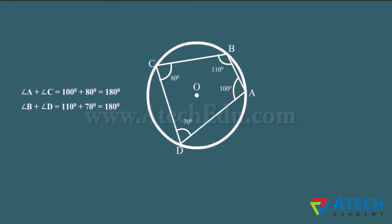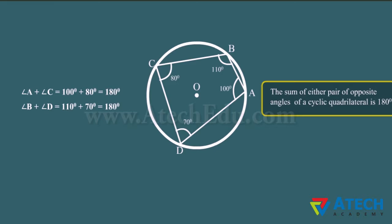Hence, we can conclude that the sum of either pair of opposite angles of a cyclic quadrilateral is 180 degrees.